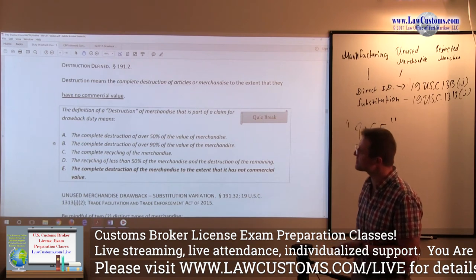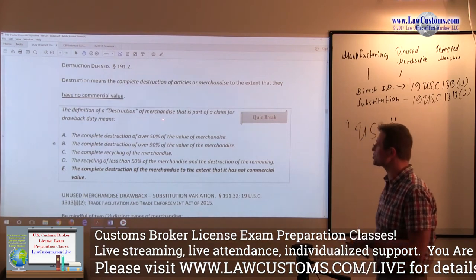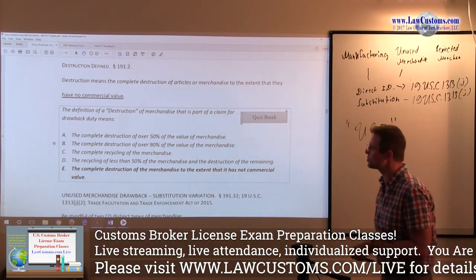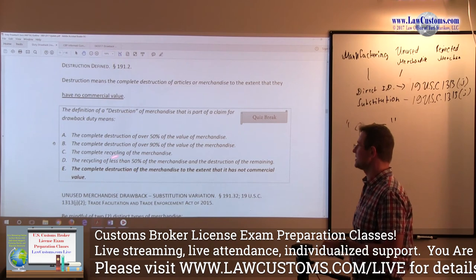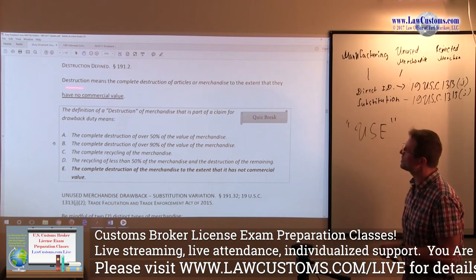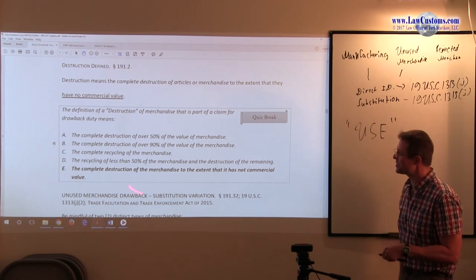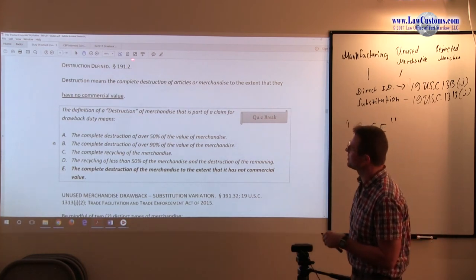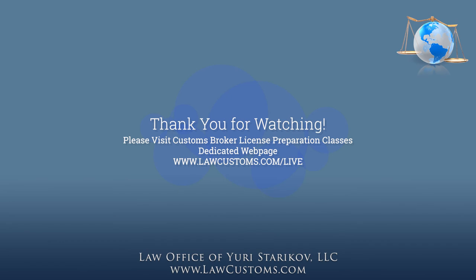Here's how customs examiners have tested on this in the past. The definition of destruction of merchandise that is part of a claim for drawback duty means: complete destruction over 50, complete destruction over 90, complete recycling less than 90, or to the extent that it has no commercial value. 'No commercial value' are the buzz words which you must match and pick the right answer pursuant to 191.2. So E is the correct answer here.